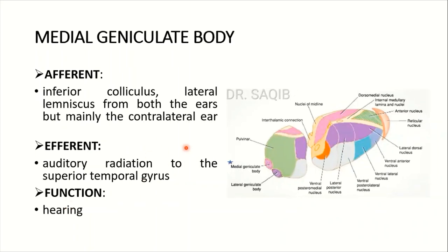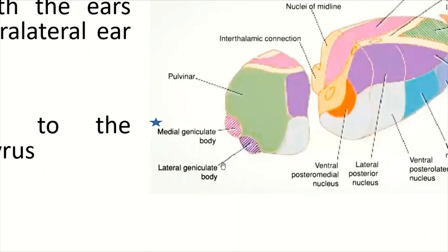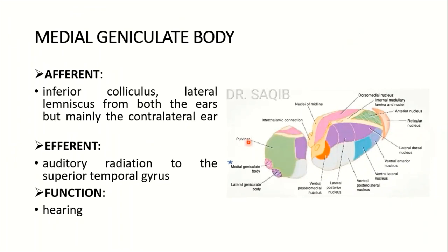The medial and lateral geniculate bodies form the metathalamus. The medial geniculate body receives afferents from the inferior colliculus and the lateral lemniscus from both ears, but mainly the contralateral ear. Its efferent is the auditory radiation to the superior temporal gyrus. Its function is hearing — the memory tip being 'M for Music' for the medial geniculate body.